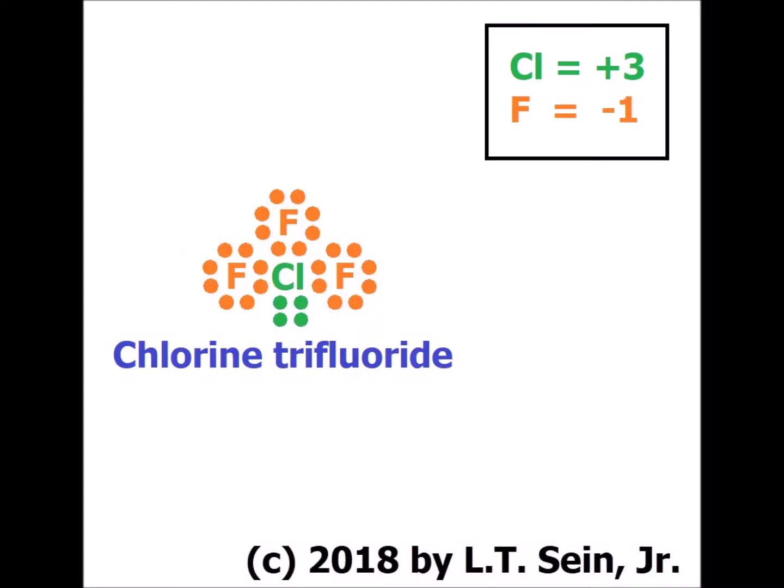As we are familiar with fluorine, each fluorine started with seven electrons and now has eight, so each of the fluorine atoms has an oxidation number of minus one in chlorine trifluoride.